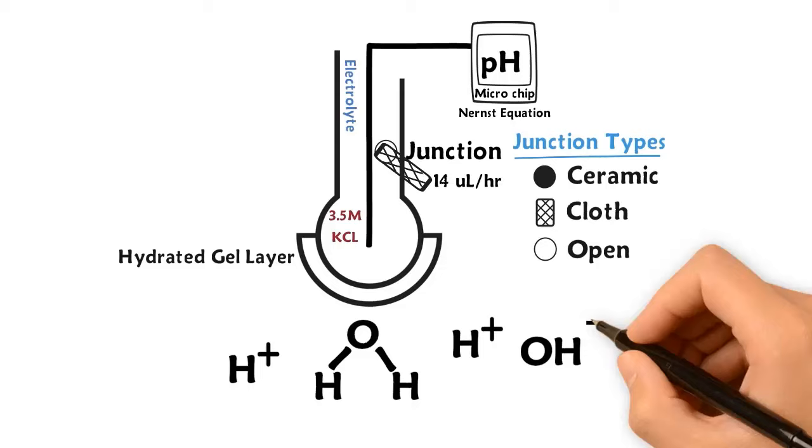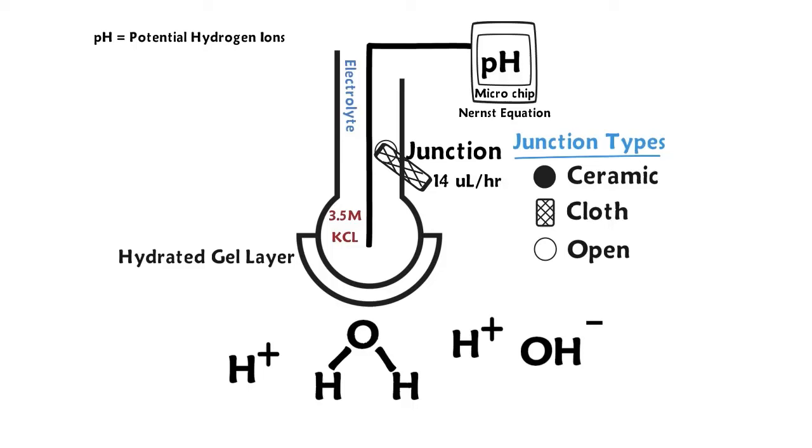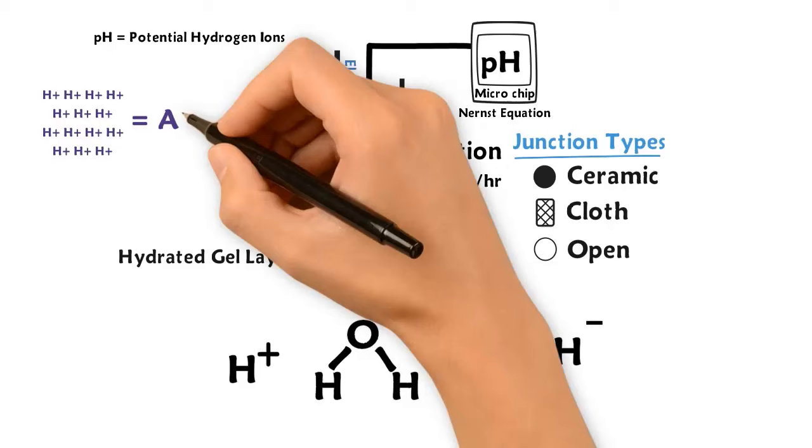pH stands for potential hydrogen ions. When measuring the pH of a solution, you are measuring the number of hydrogen ions in that solution. A large number will create an acid solution, and a low number will represent a base solution.